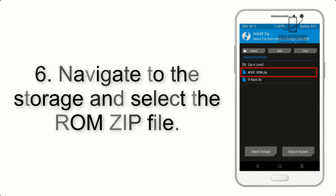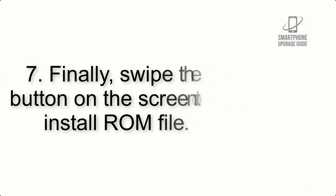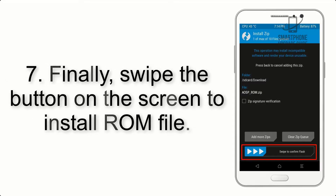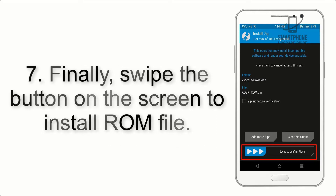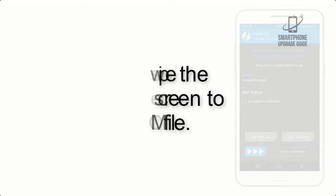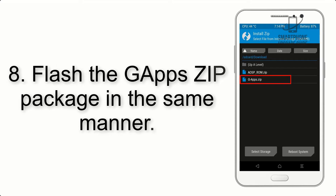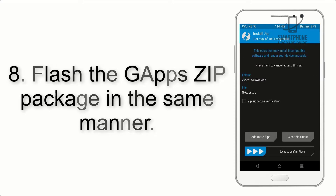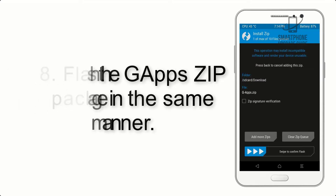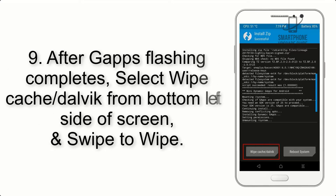Step 5: Go back to the recovery main screen and tap on the Install button. Step 6: Navigate to the storage and select the ROM zip file. Step 7: Swipe the button on the screen to install the ROM file. Step 8: Flash the GApps zip package in the same manner.